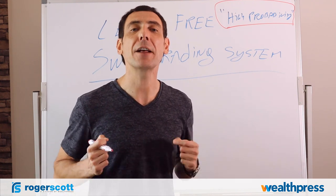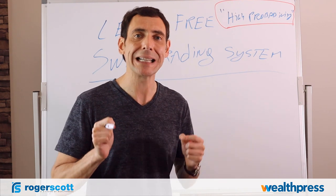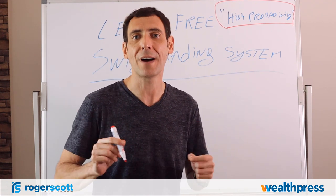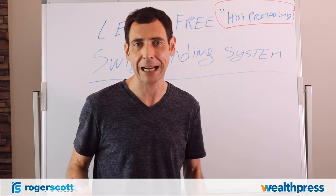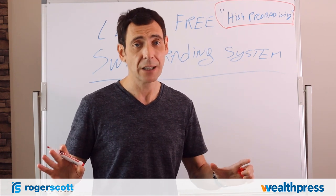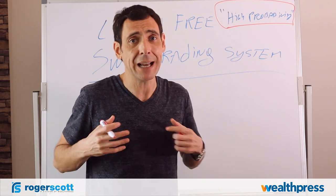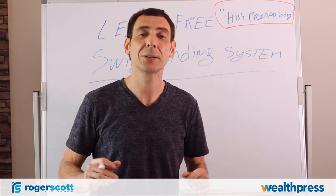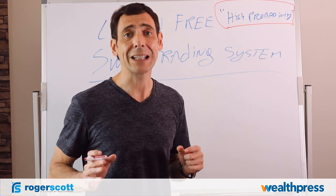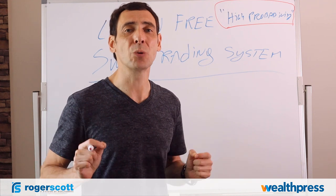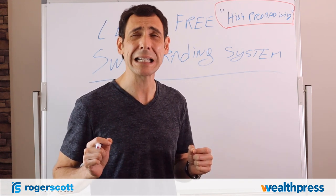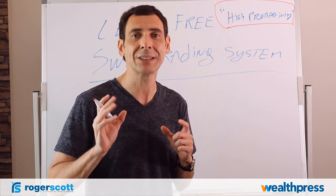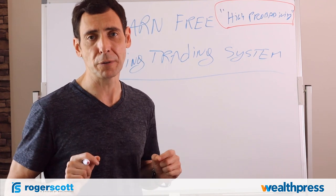Why did they fail? They failed because stocks are a counter-trending asset. If you look at the S&P 500 over the last 20 years, you'll find that it made less than 7% return annually. That's a fact. Believe it or not, over the last 20 years, the S&P has generated about 6.98% return per year — don't quote me on that, but it's less than 7%.